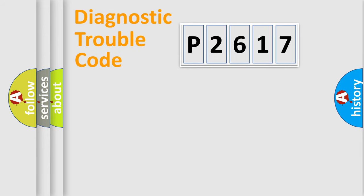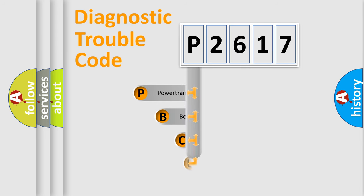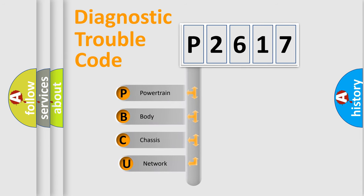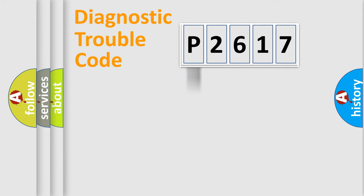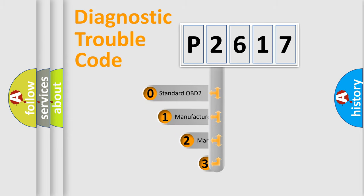Let's do this. First, let's look at the history of diagnostic fault code composition according to the OBD2 protocol, which is unified for all automakers since 2000. We divide the electric system of an automobile into four basic units: Powertrain, Body, Chassis, and Network. This distribution is defined in the first character of the code.